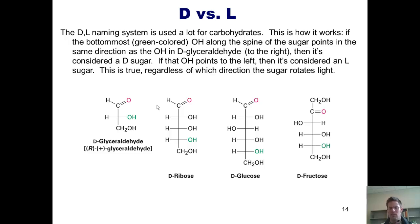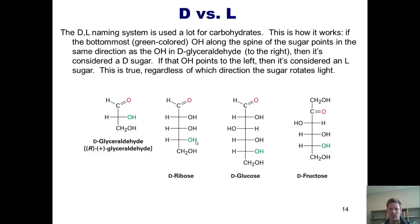So how does the D/L naming convention work? When we draw a Fischer projection of a sugar, if the bottom-most OH — which I've colored green in all of these examples — is pointing to the right, then we say it's a D sugar. If the OH is pointing to the left, then it's considered an L sugar. That's pretty much it. It doesn't matter which direction the remaining OHs are pointing. The only thing that matters is the bottom-most OH, and this applies when we're drawing the open-chain Fischer projection of the sugar.